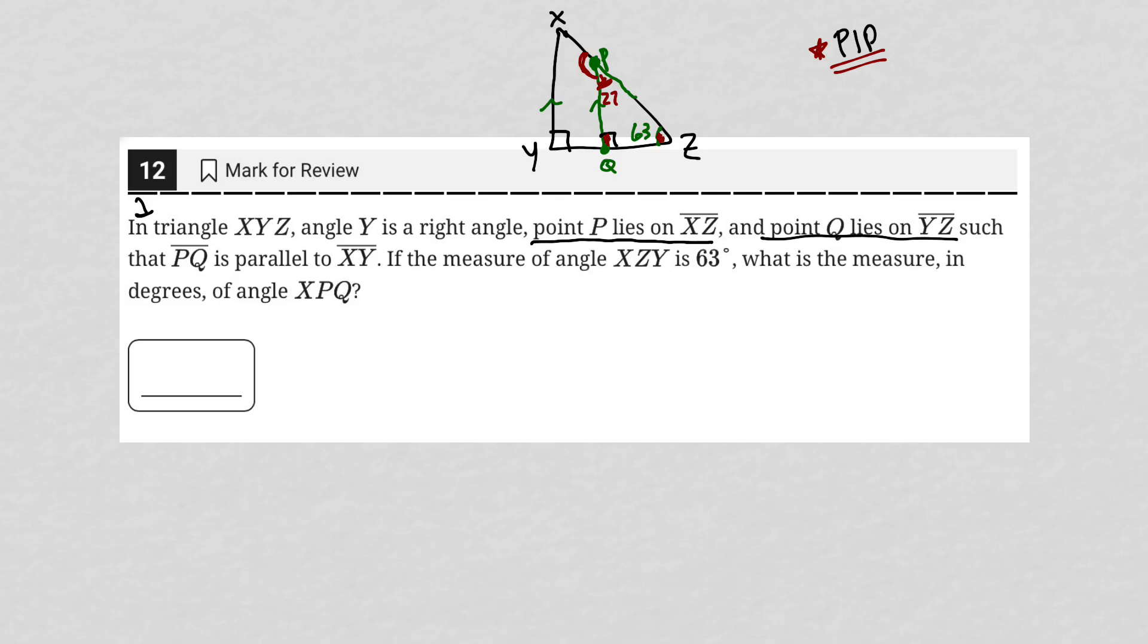Now that we know that this is 27, we can quickly find, or easily, I should say, find the angle in question, this XPQ, because those two angles are supplementary, right? They form this straight line, X through P to Z. So those angles,